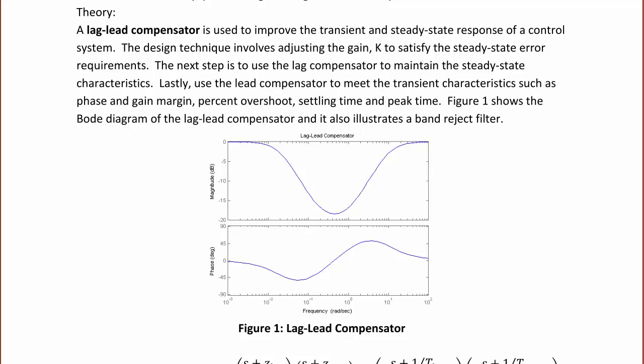Now let's do a lag-lead compensator example. A lag-lead compensator is used to improve both the transient and steady-state response of a control system. The design technique involves adjusting gain K to satisfy the steady-state error requirements, then using the lag compensator to maintain steady-state characteristics, and the lead compensator to meet transient characteristics such as phase margin, gain margin, percent overshoot, settling time, and peak time. Figure 1 shows the Bode diagram of the lag-lead compensator — since lag and lead are cascaded, it creates a band-reject filter.